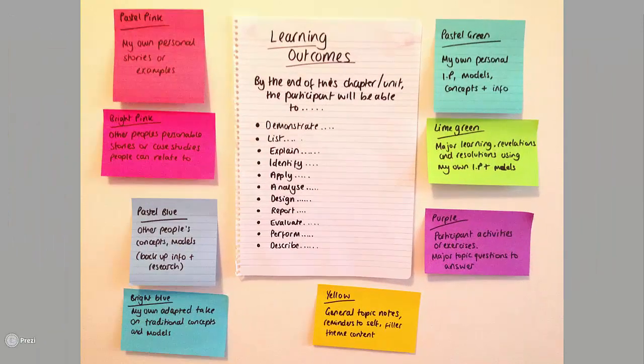Here is my particular colour coding — you're more than welcome to copy it. I use pink for personal stories or examples; green for my own personal models, concepts, information and ideas; blue for other people's concepts, research and models, which acts as backup research around your own ideas; yellow as general topic notes, reminders and easier reading fillers; and purple for activities, exercises or major questions that people need to answer. Seeing it physically like this really enables you to see if you've got too much of one type of information, meaning you'd only be delivering to a limited portion of your participants.